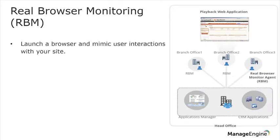The real browser monitor helps you launch a browser and mimic a user interaction with your site. This means the real browser monitoring helps you perform the navigational path flow that any visitor of your site will probably have. Imagine a visitor landing on your site, navigating across two or three URLs, and then checking out. This behavior or any user path flow can be mimicked, and the performance, responsiveness, and loading time of each page can be analyzed to ensure every user browsing your website from any part of the world has the same optimal browsing experience.